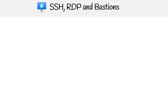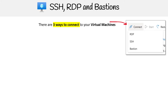One thing you might want to be able to do is actually get into your virtual machine, and we have a lot of different options available to us. We have three ways to connect to our virtual machines: we have RDP, SSH, and Bastion. If you don't know these things, we're going to walk through them right now.